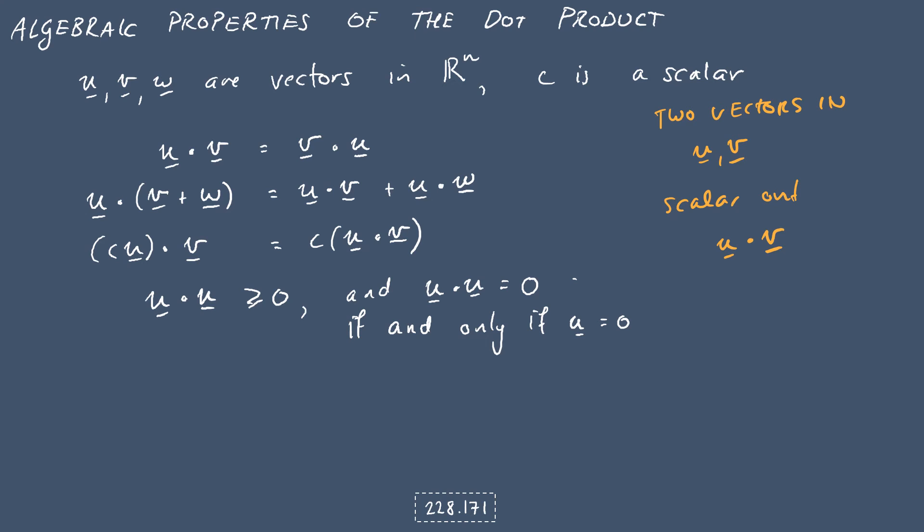So we have u dot v equals v dot u, so first thing that's reassuring, it doesn't matter in which order we do the dot product, we'll get the same answer. You can expand parentheses in this way, if you've got the sum of two vectors v and w, and you take the dot product with u, you can expand that and take dot products with the two pairs u and v and u and w.